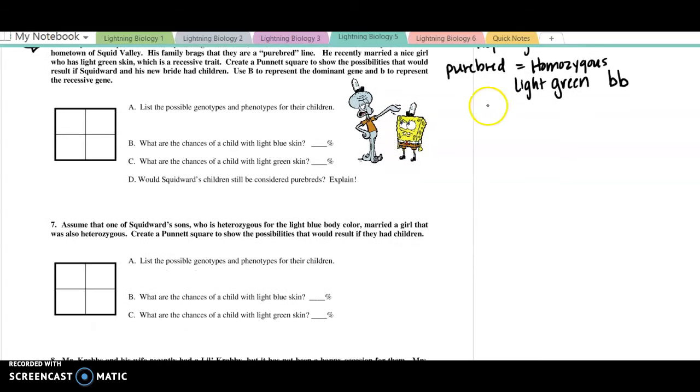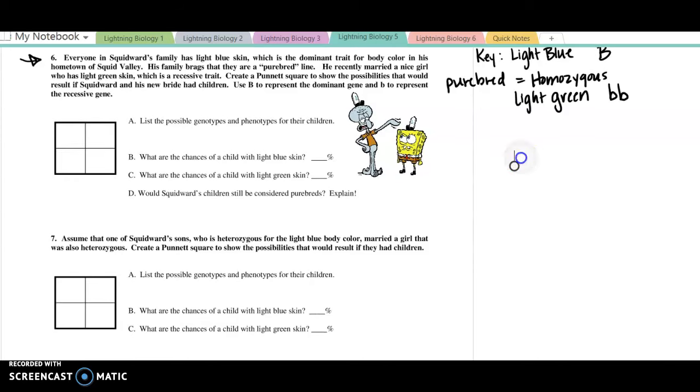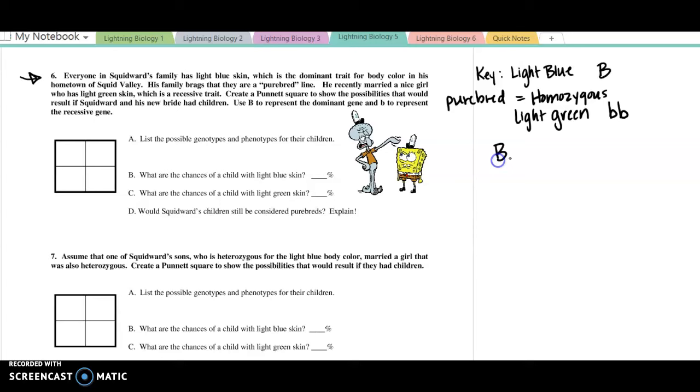I have my cross. We have Squidward, who is blue, but we don't know his genotype. So it's Big B with nothing there. And he has an offspring with a light green skin individual. Create a Punnett square to show the possibilities. Everyone in Squidward's family has light blue skin, which is dominant. His family brags they're purebred. So we're going to make an assumption that he's going to have this purebred.